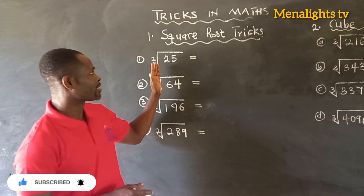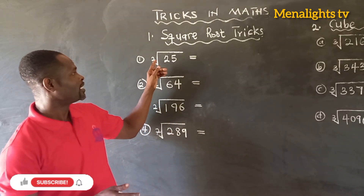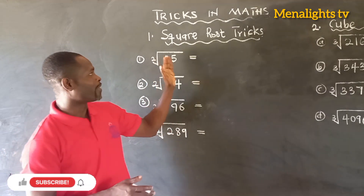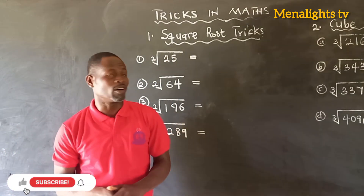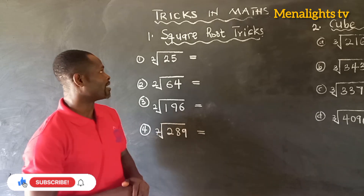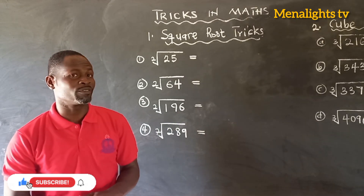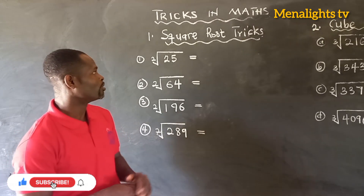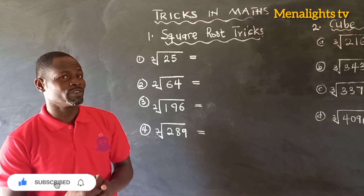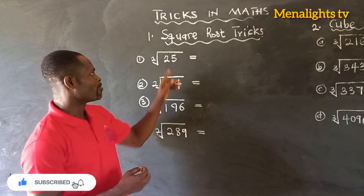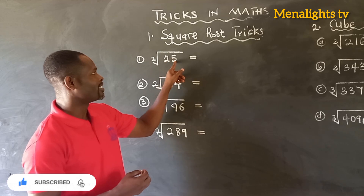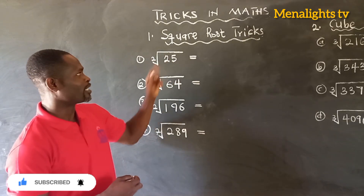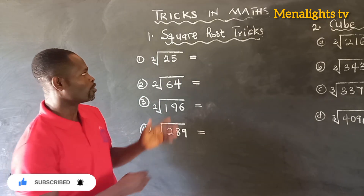As you can see here, you have to find the square root of 25. So what we have to do is we are going to add these numbers and then deduct the 2 from it.